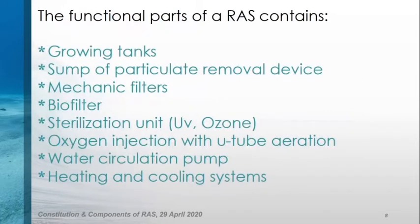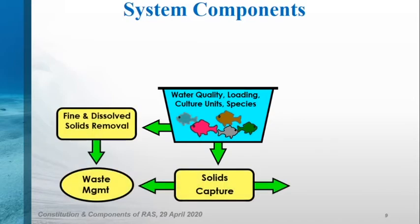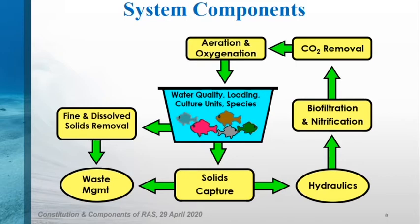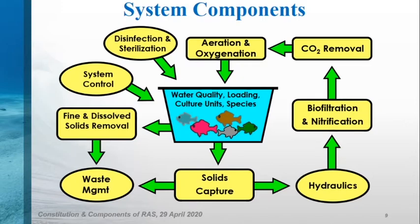The functional parts of a RAS contain growing tanks, a particulate removal device, mechanical filters, a biofilter, sterilization — mostly UV or ozone — oxygen injection, water circulation pumps, and heating and cooling systems. Water quality can change due to stock size, feeding regime or species, and should be kept at optimal levels. In recirculating aquaculture systems, dissolved or non-dissolved waste is first captured and removed by mechanical filters. After that, ammonia is removed by the biofilter using nitrification bacteria. Then saturated gases, especially carbon dioxide, are removed and oxygenation is applied. Ultimately water is sterilized and given back to the system.